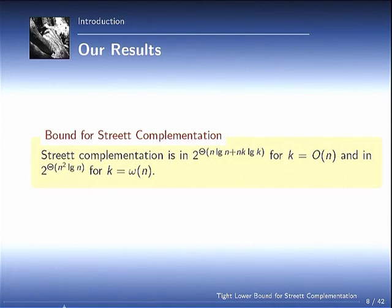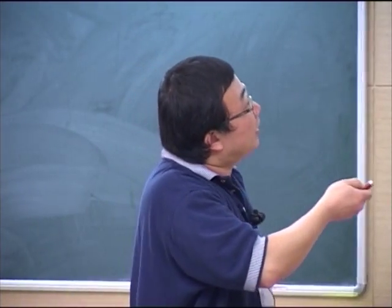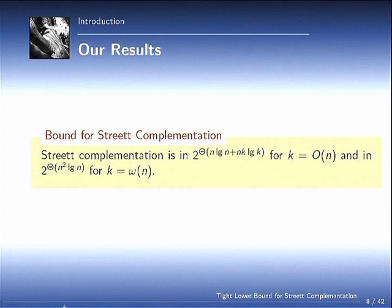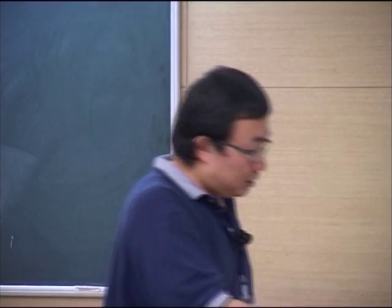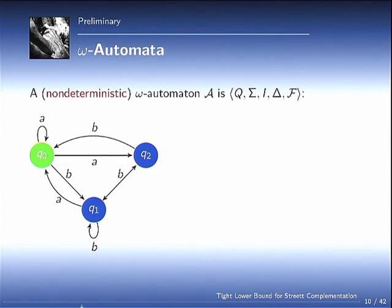Now, in this talk, I'm going to talk about the result on Streett complementation. For Streett complementation, we have this nice result where we have this theta on the exponent. That means in this talk, we talk about how to get the lower bound. The upper bound was published in CSL this year. This is the result I'm going to talk about next.